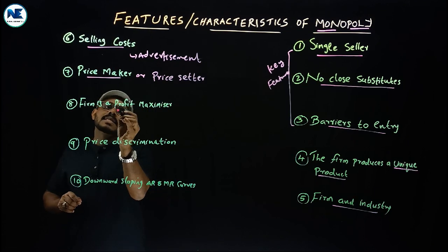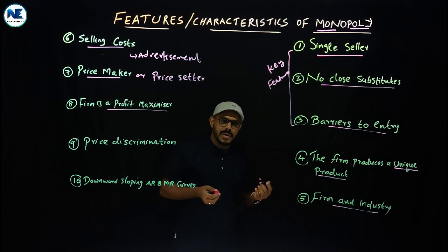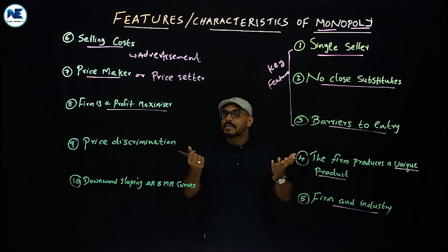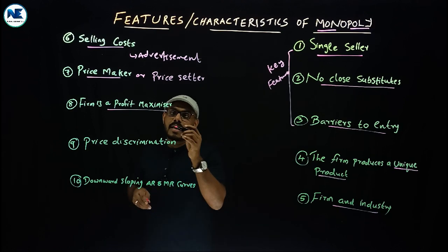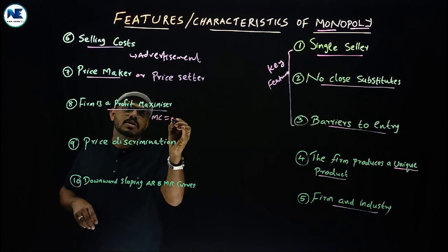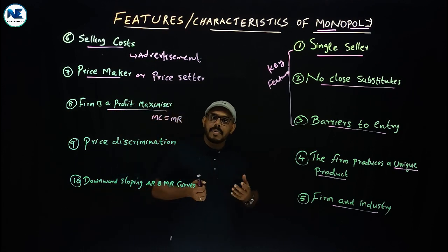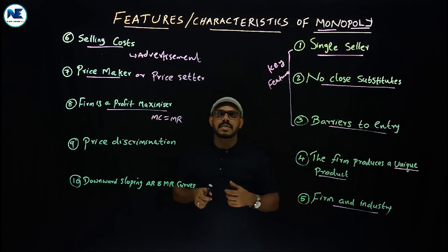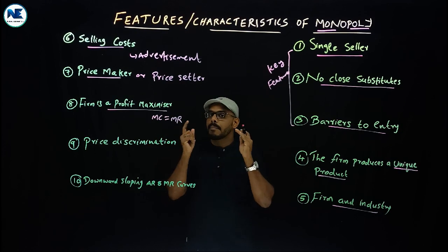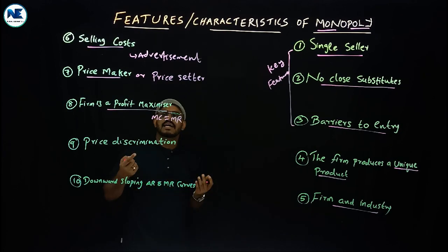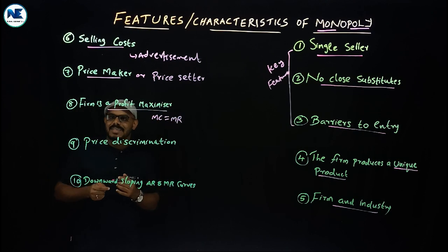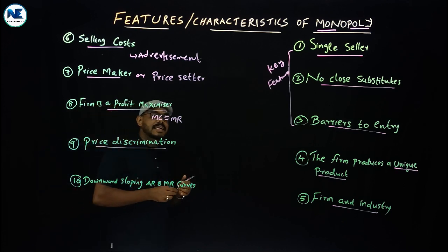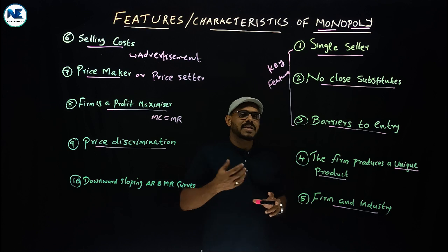The eighth feature is that the firm is a profit maximizer. The sole objective and goal of monopoly is to maximize profit. The firm can equate marginal cost equal to marginal revenue and thereby reap maximum profit. In any situation, under monopoly, the goal of the firm is profit maximization — so the firm is a profit maximizer.